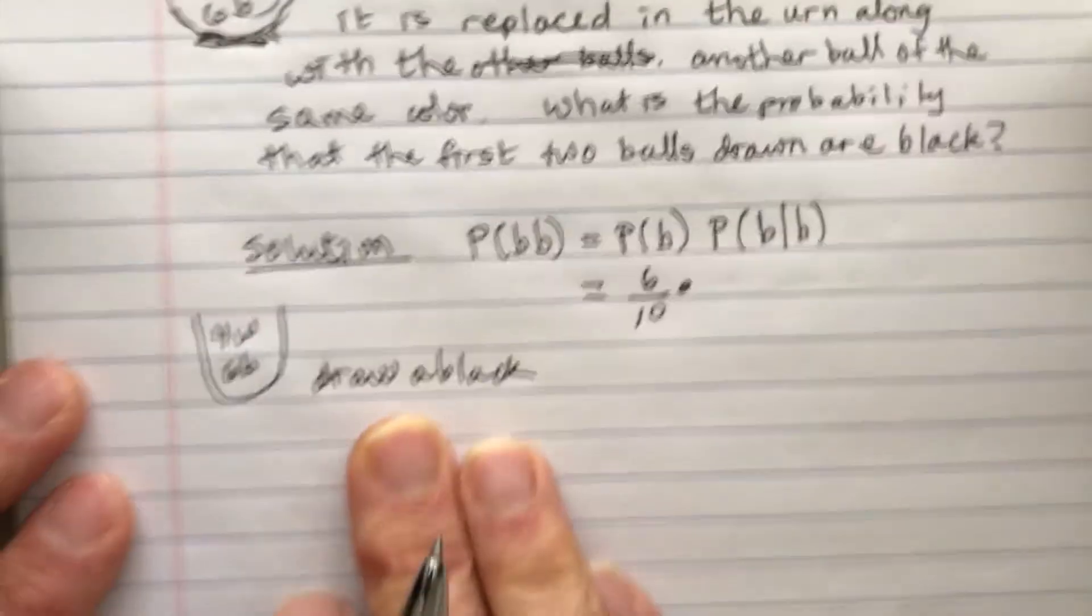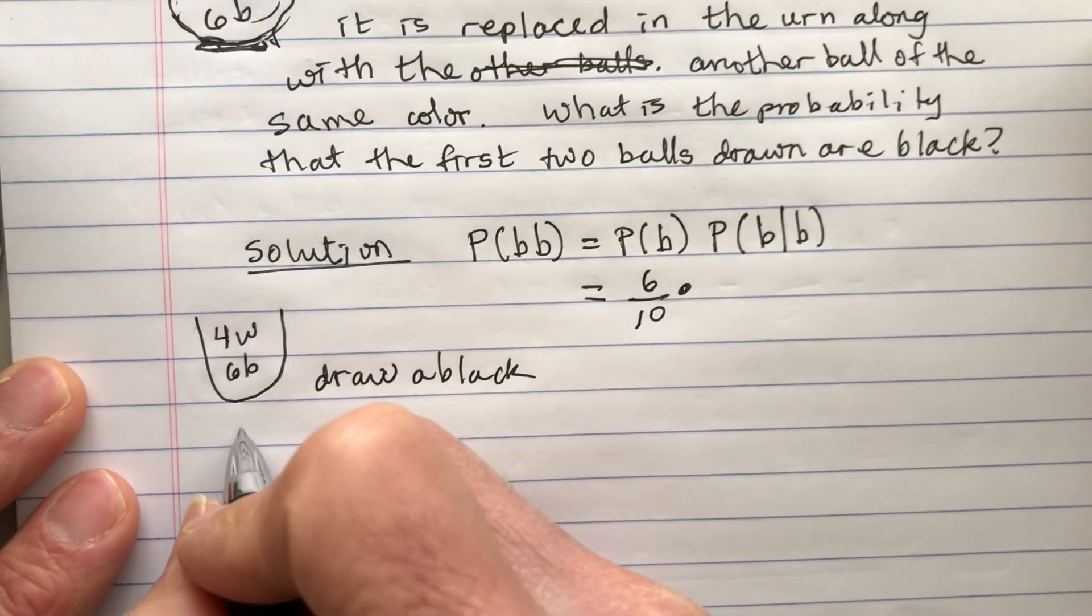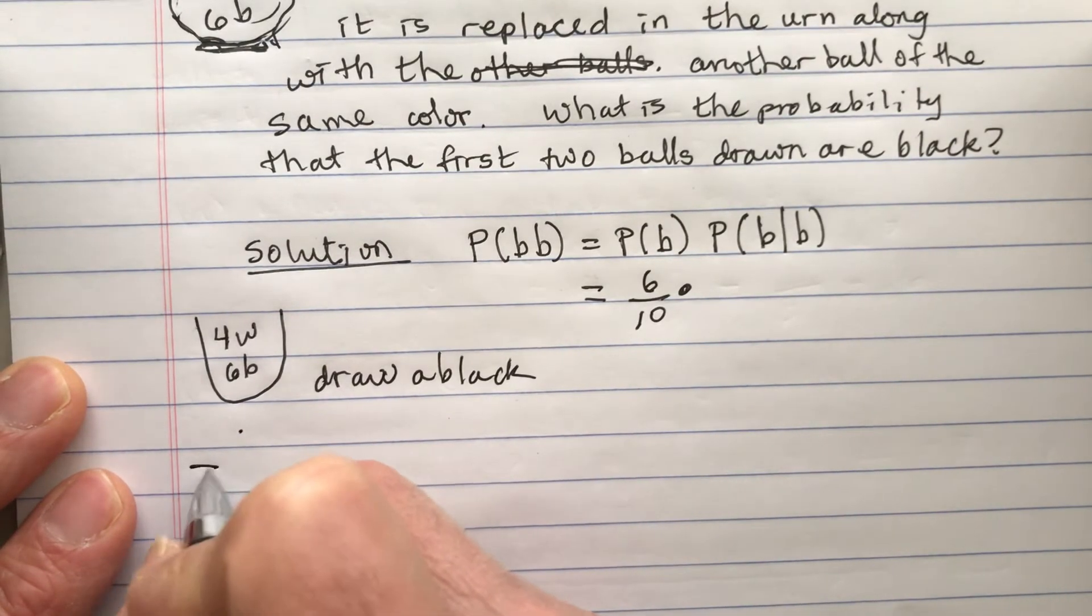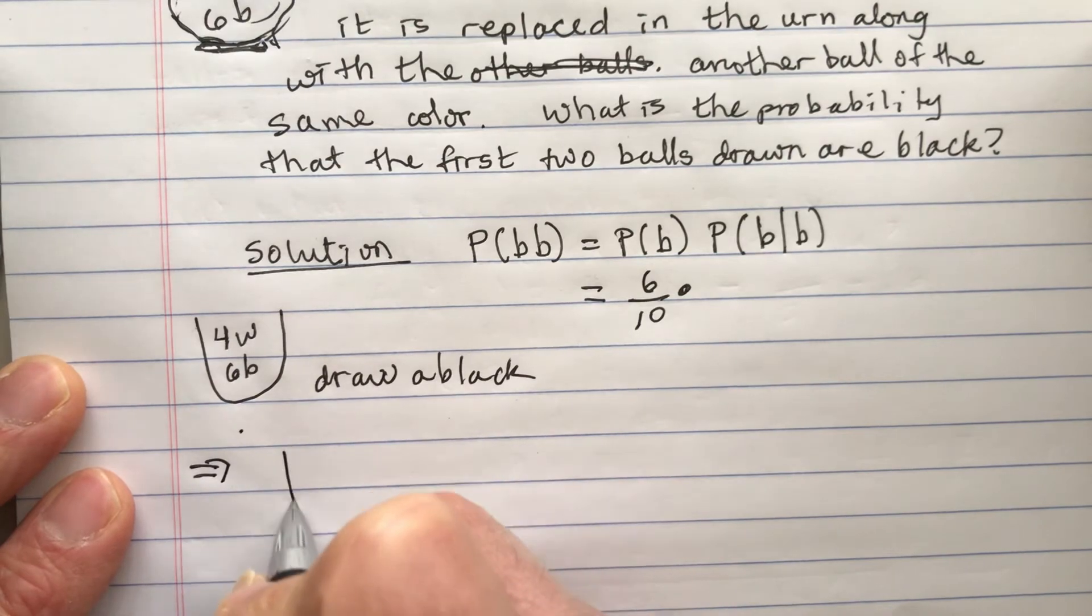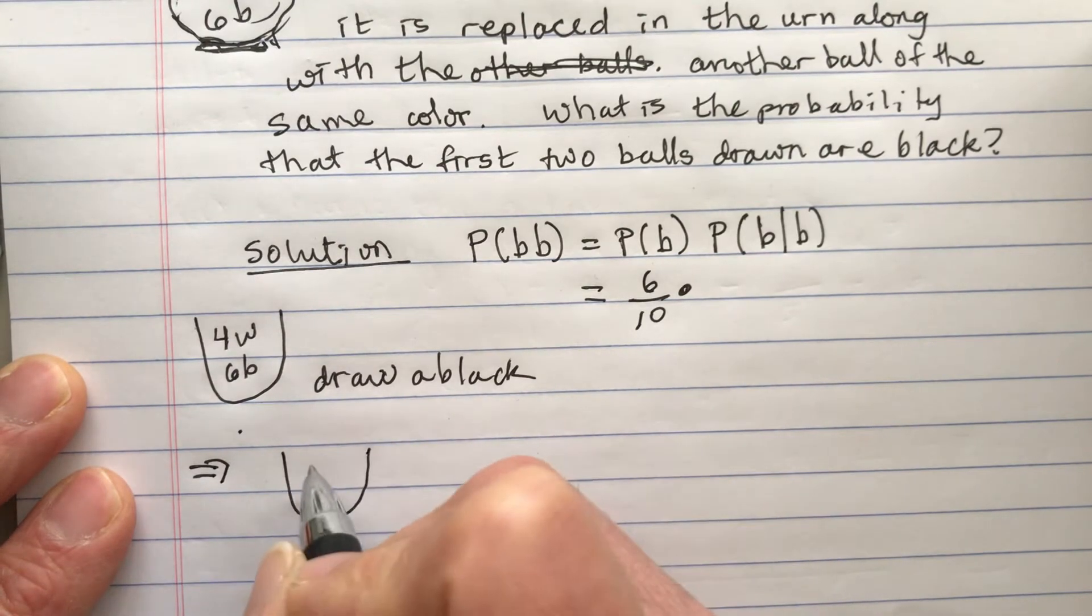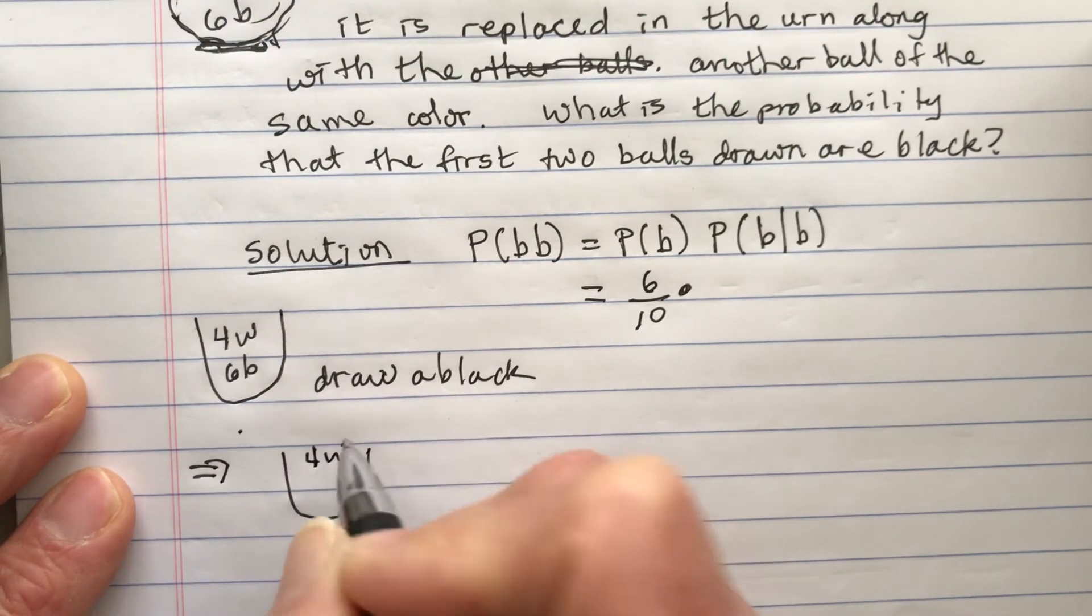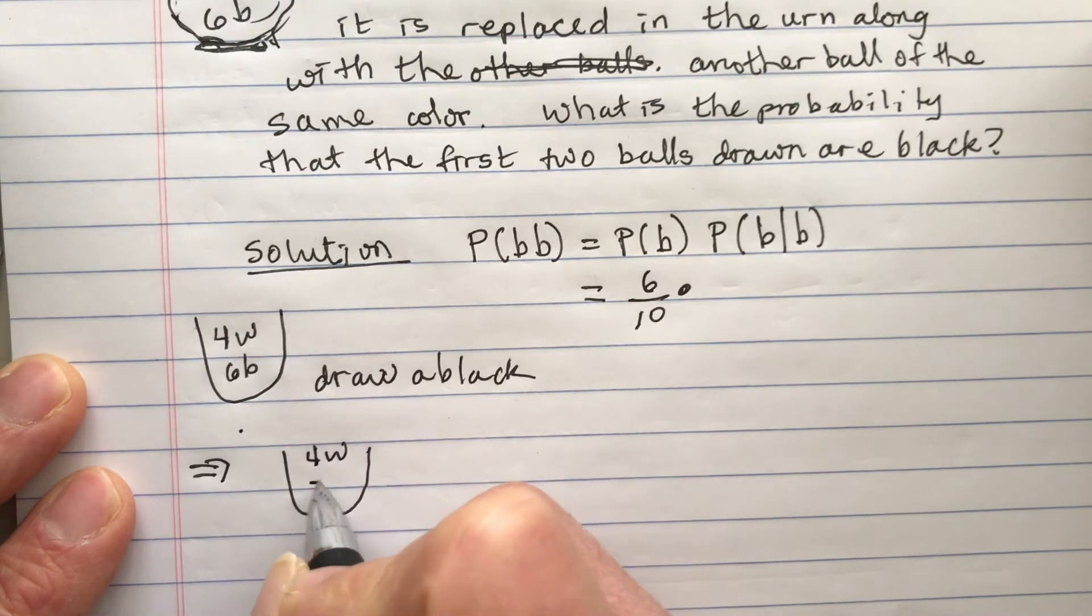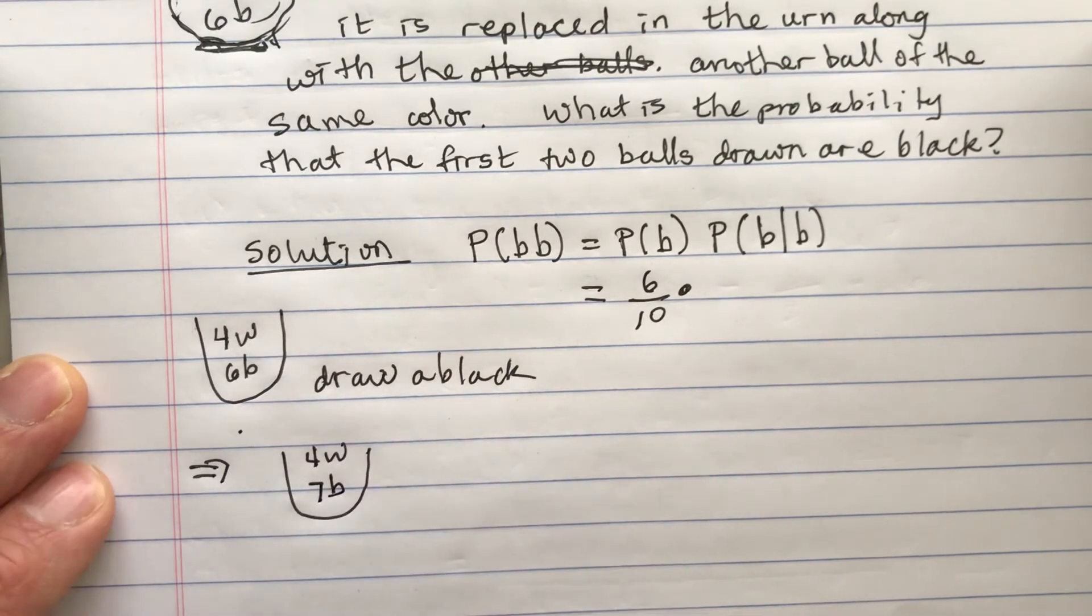Okay, the thing about this is when we draw a black, we go to our next picture. When you draw the black you add one of the same color. You put the black in and then you add one of the same color. So now there's seven blacks.